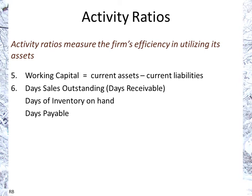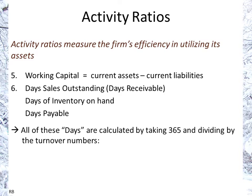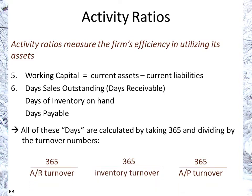Working capital is simply current assets minus current liabilities — not a ratio itself, but often calculated within ratio analysis. The days metrics — days sales outstanding, days of inventory on hand, and days of payables — are connected to the turnover ratios, calculated as 365 divided by the respective turnover number. For example, a receivables turnover of 12 gives 365/12, roughly one month, meaning receivables are collected about monthly.